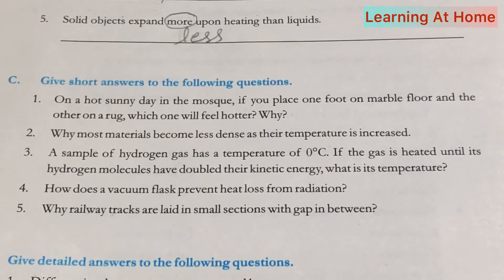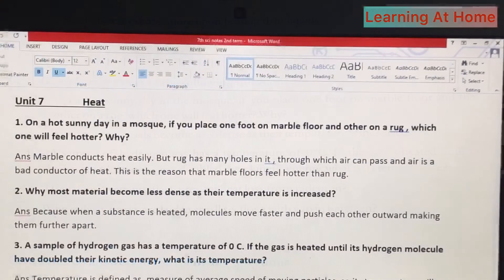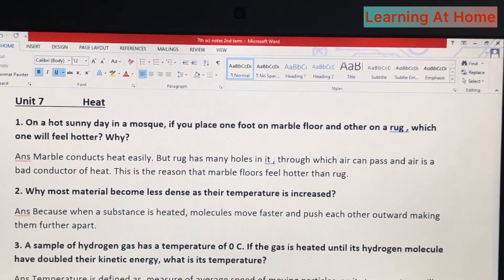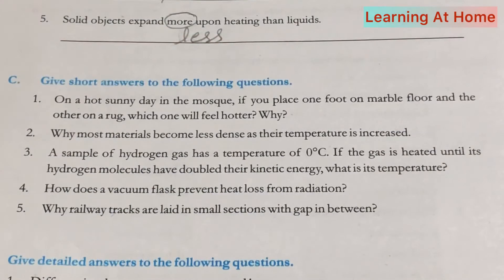Now we will answer the short questions. Question number one: on a hot sunny day in the mosque, if you place one foot on a marble floor and the other on a rug, which one will feel hotter and why? Answer: marble conducts heat easily, but a rug has many holes through which air can pass, and air is a bad conductor of heat.